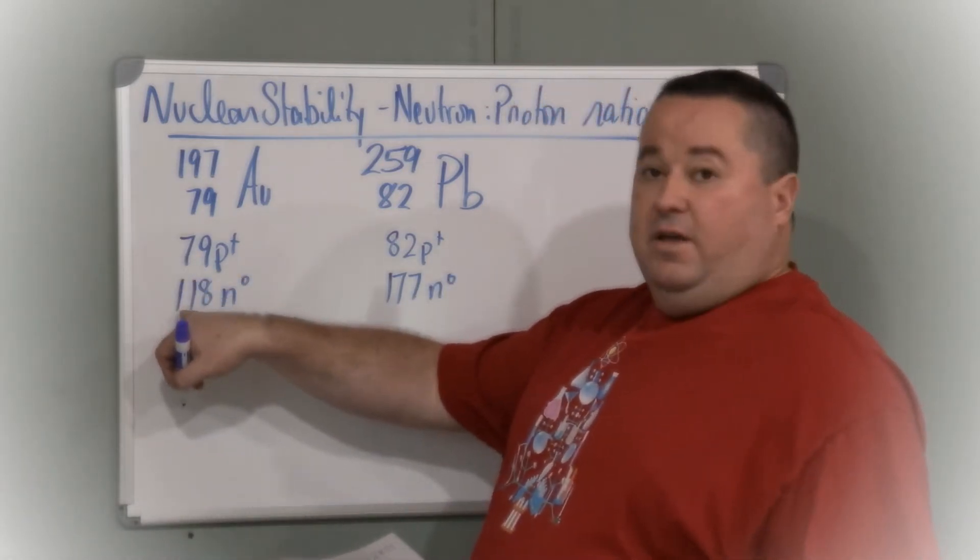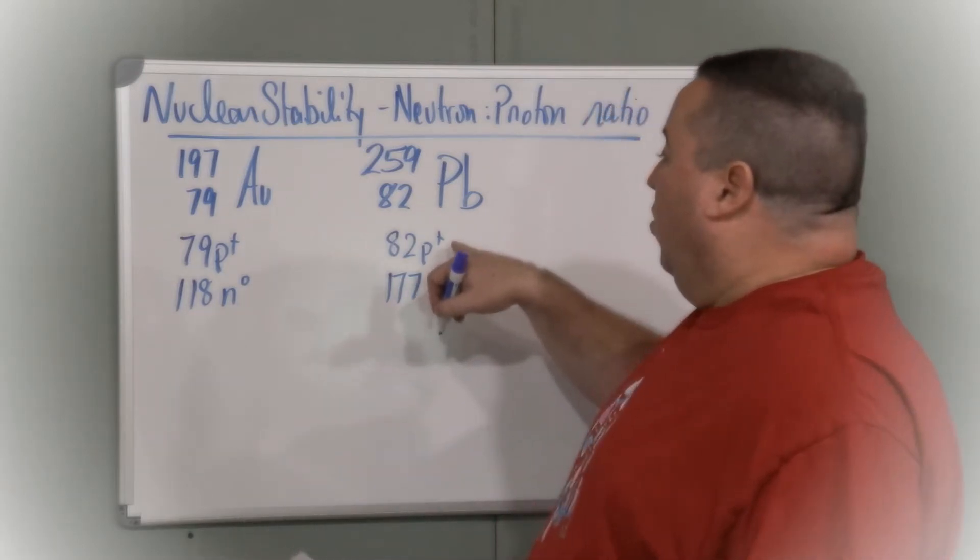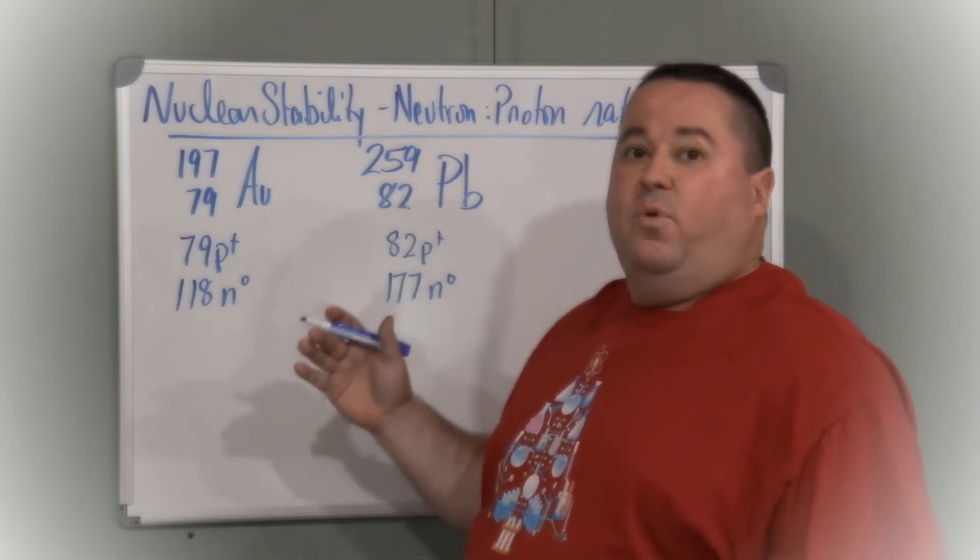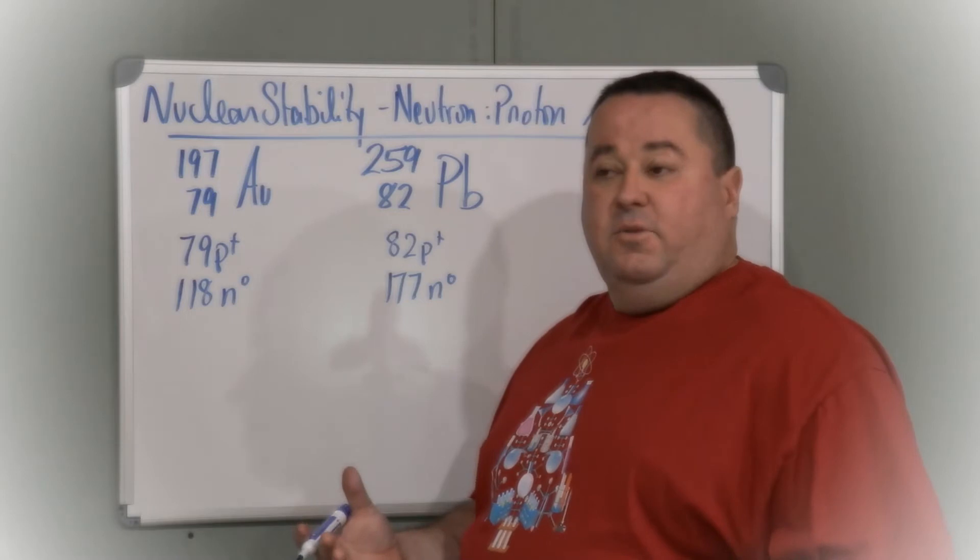So what we see is an odd number of protons and an even number of neutrons, or an even number of protons and an odd number of neutrons. Both have one odd and one even number. Neither would be favored over the other because they both have one odd.